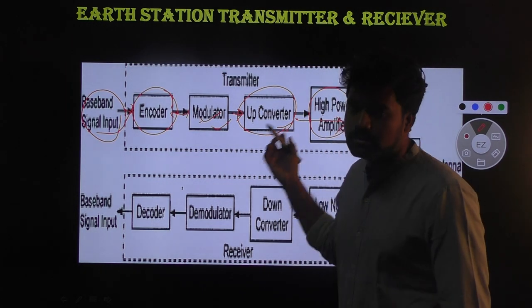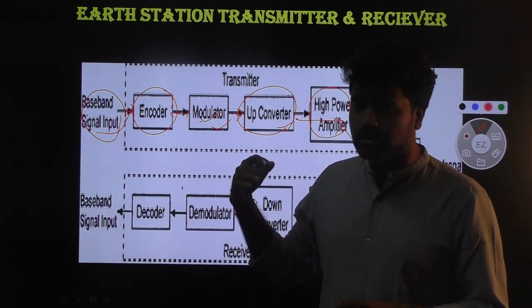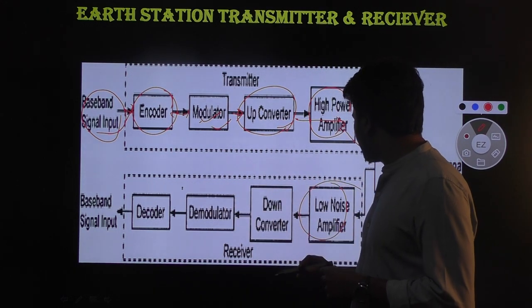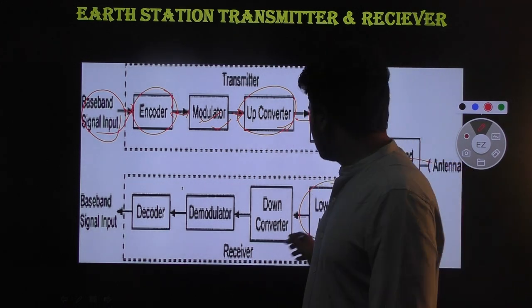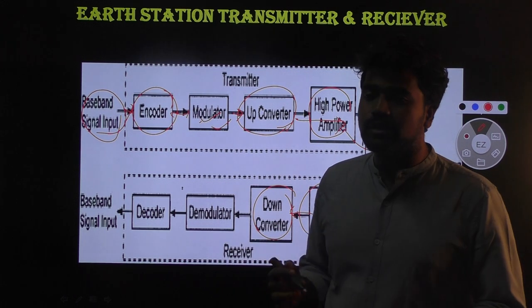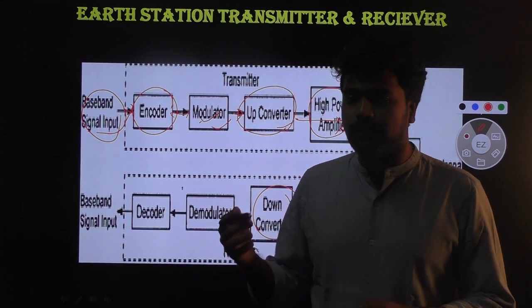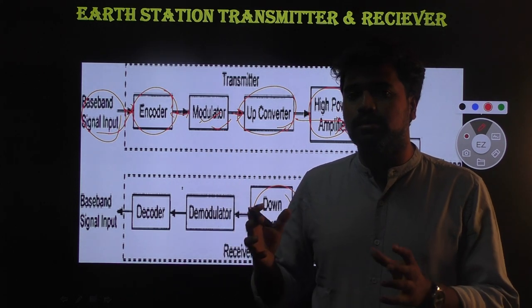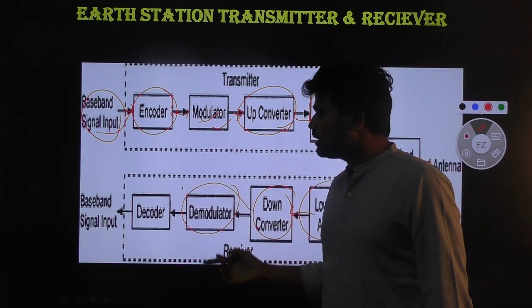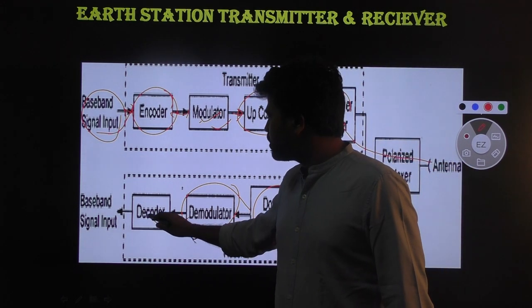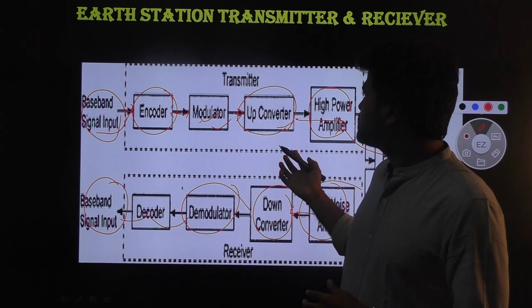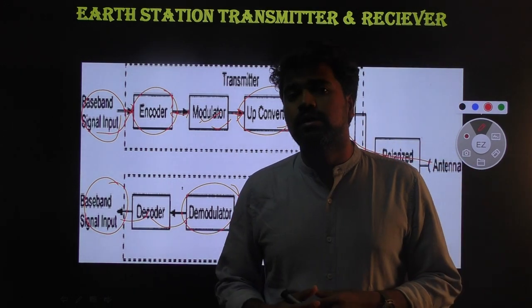After the satellite receives the signal, it is passed to a low noise amplifier and then to a down-converter, which converts it to the downlink frequency range. A demodulator is used to recover the original baseband signal, which is then decoded back to an analog signal. The information is finally received at the destination. This is the complete process of the earth station transmitter and receiver.